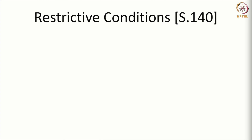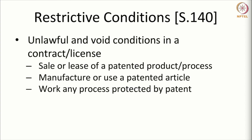There are certain restrictive conditions that have to be avoided in any contract or agreement pertaining to patents. These conditions are referred to in Section 140 of the Patents Act. It says that it is unlawful and void to have conditions in a contract or a license, and the contract or the license may pertain to sale or lease of a patented product or process, manufacture or use, or to work any process protected by patent. In these agreements, it is not appropriate to have the following restrictive covenants.